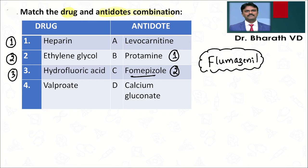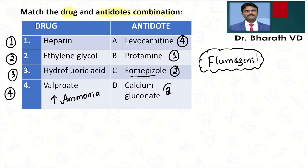Third: hydrofluoric acid — we'll come back to that. Fourth: valproate. When we give valproate, it increases ammonia levels — that is called valproate-induced hyperammonemia. The antidote is levocarnitine. Now, hydrofluoric acid is used in glass industries. It can cause burns and hypocalcemia, so the antidote we give is calcium gluconate.